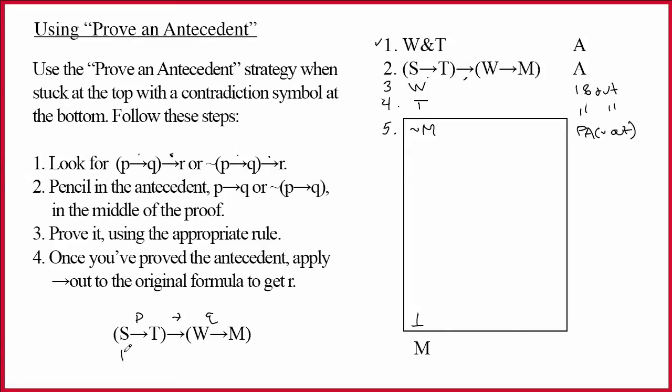So notice, I could say to myself, I'm going to think of S as P. I'm going to think of T as Q. And then I'm going to think of the entire consequent here as R. So this is an instance of P arrow Q arrow R.